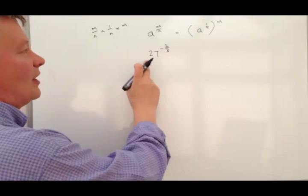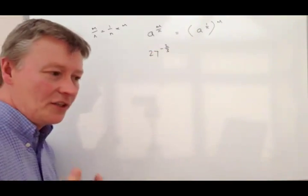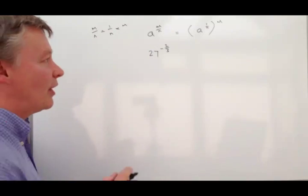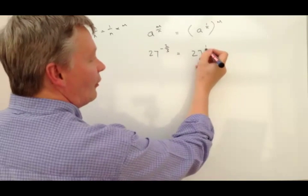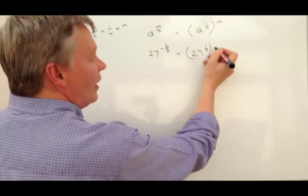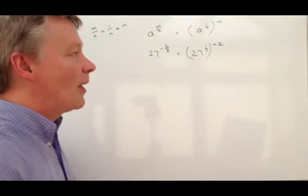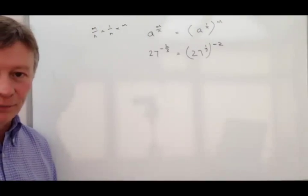So we've got 27 to the power of minus 2 over 3. What I'm going to do is break it into its component parts and what that's going to give me is 27 to the power of 1 third and that's going to be multiplied by minus 2.